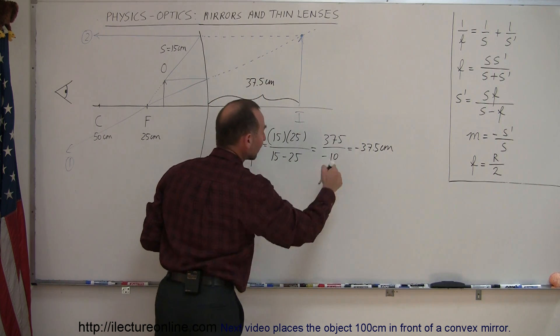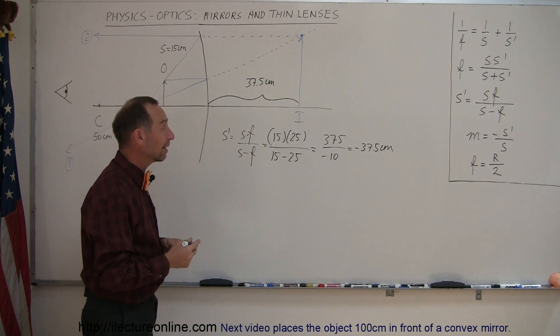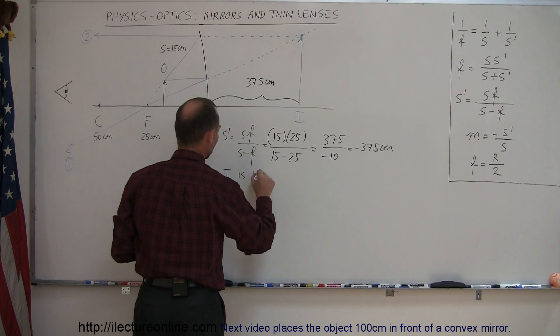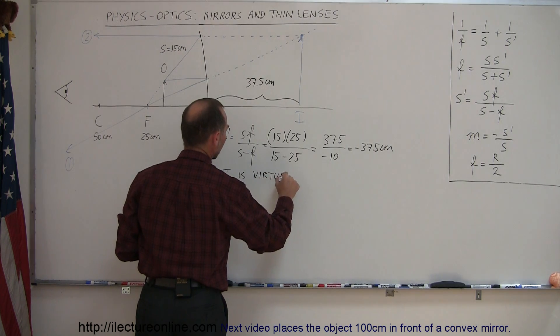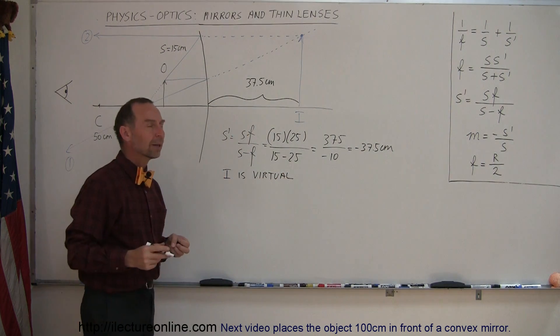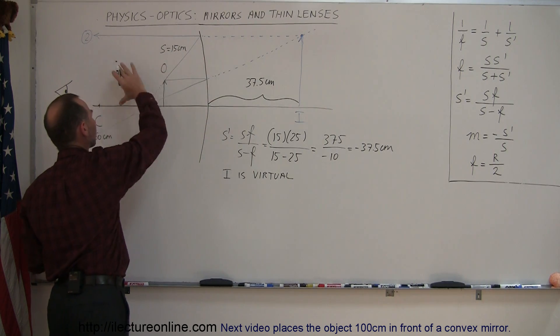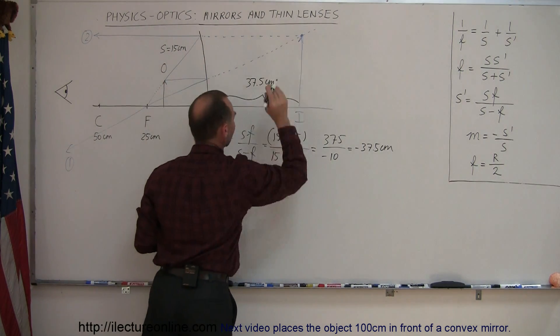The negative places it behind the mirror, which would then indicate that it is a virtual image. So I is virtual. Virtual means it's not a real image. It's just an image that the brain conjures up by seeing those rays apparently coming from the single point right there.